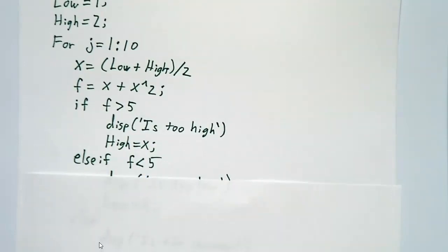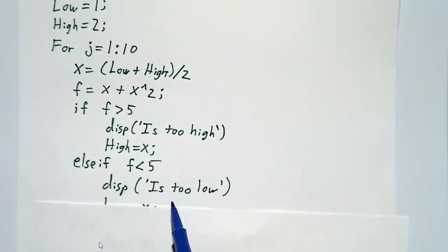If f is less than 5, we print out, it's too low. And we replace our lower bound with x. And then we go back.